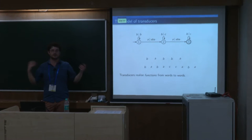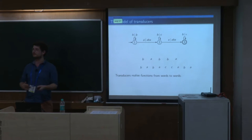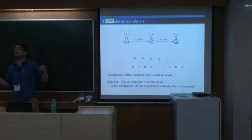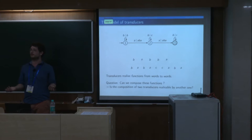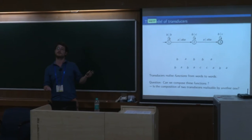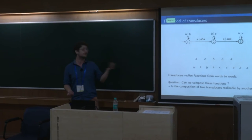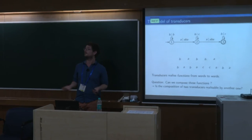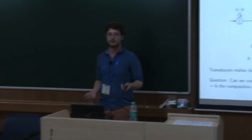The natural question when dealing with functions is: can you compose them? Of course these are functions so you can compose them, but the key question is: if I'm given two transducers, can I construct another one that computes this composition? Meaning, is this class of machines stable under composition?